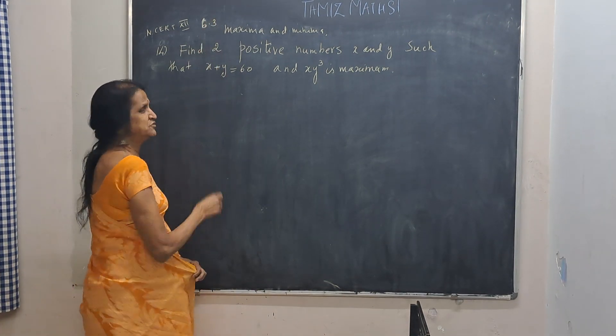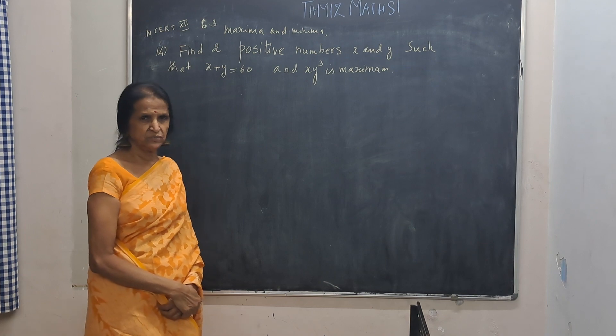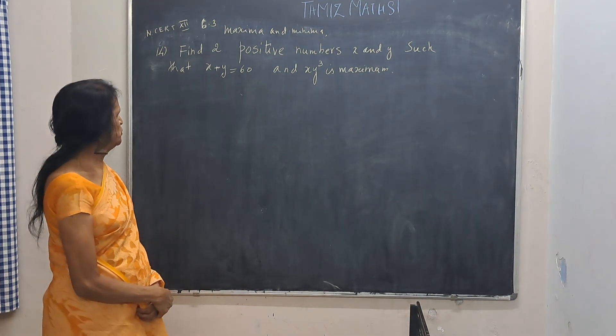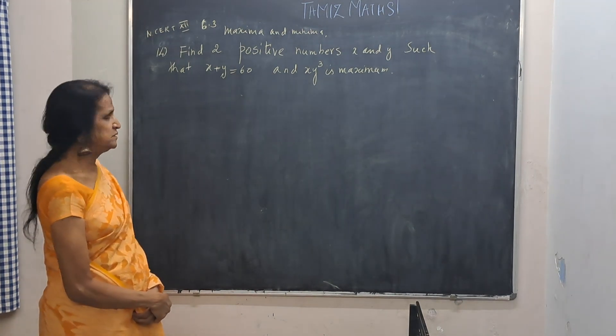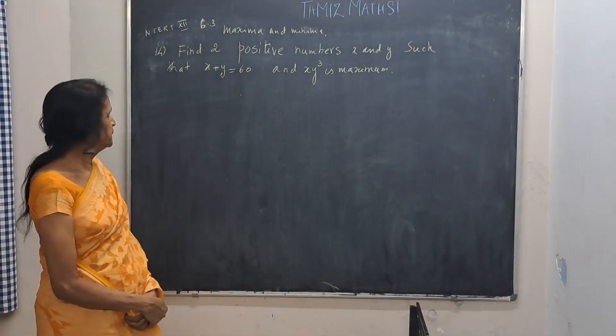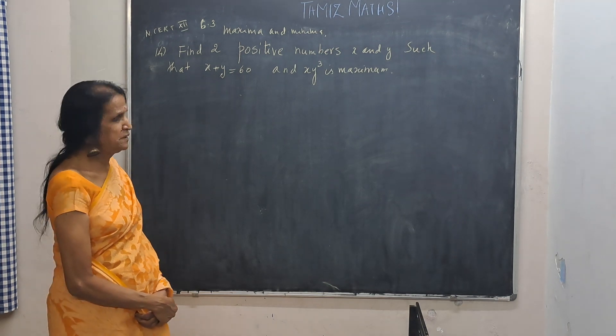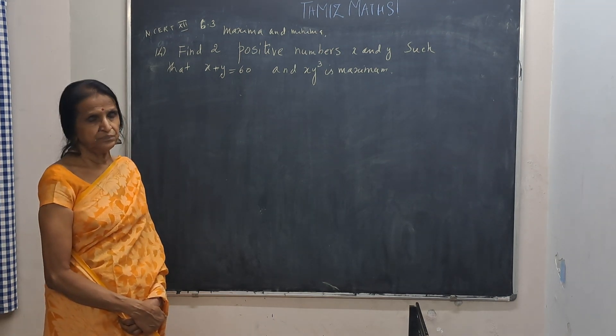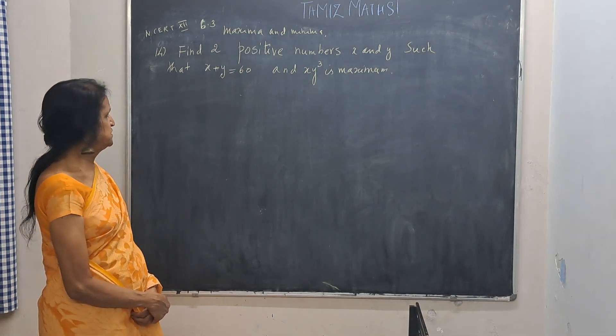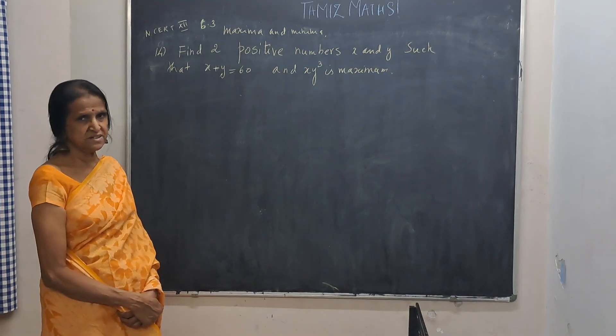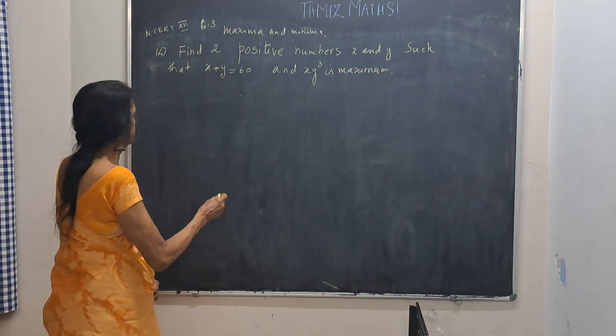Problem number 14. I have chosen problem number 14. Find two positive numbers x and y such that x plus y is 60 and x y cube is maxima.